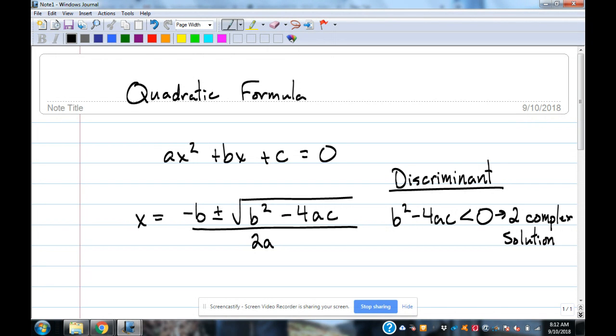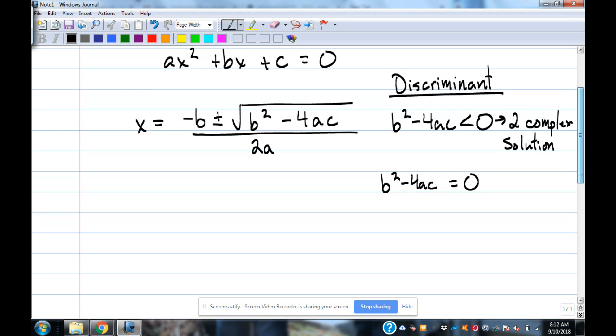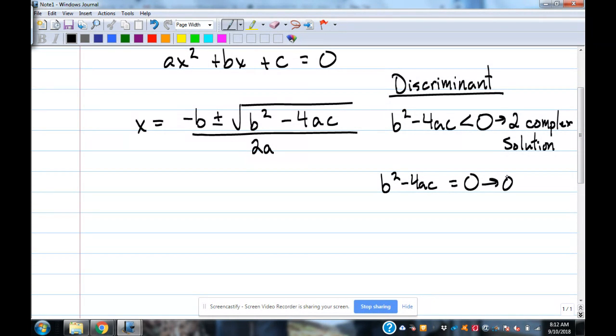If b squared minus 4ac is equal to zero, what that means is we have one real solution. If b squared minus 4ac is equal to zero, because when you add zero to negative b, you get negative b back. When you subtract zero from negative b, you still get negative b back. So it doesn't create two separate answers.